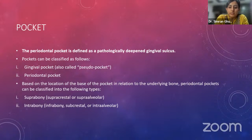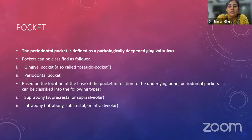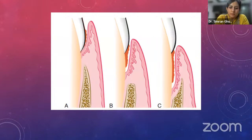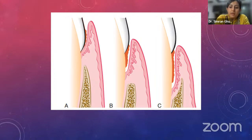Based on the location of the base of the pocket in relation to the underlying bone, periodontal pockets are classified as suprabony — also called supraCrestal or supra-alveolar — where the base of the pocket is coronal to the underlying alveolar bone; and intrabony — also called subcrestal or intra-alveolar — where the base of the pocket is apical to the level of the adjacent alveolar bone. With intrabony pockets, the lateral pocket wall lies between the tooth surface and the alveolar bone, and they are further divided into one-wall, two-wall, or three-wall types. An extraction socket is also known as a zero-wall cavity.